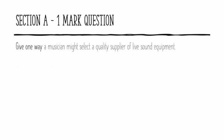For the next example, read the question carefully again. It's asking: give one way a musician might select a quality supplier of live sound equipment. So it's not asking you to name a supplier — it's asking you to give a way a musician might select one. Some possible answers are: asking someone relevant such as a music shop employee or an experienced friend, searching on the internet, or reading reviews about a supplier.